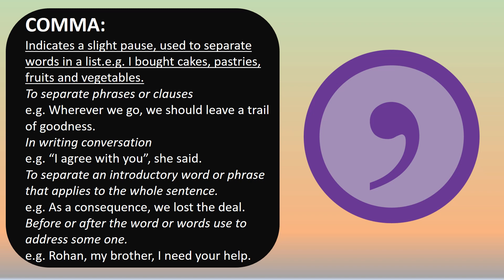A comma is used to separate an introductory word or phrase that applies to the whole sentence. Example: 'As a consequence, we lost the deal.' Here, 'as a consequence' is a phrase before the main clause. A comma is also used before or after the word or words used to address someone. Example: 'Rohan, my brother, I need your help.'